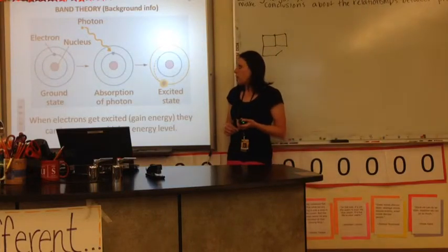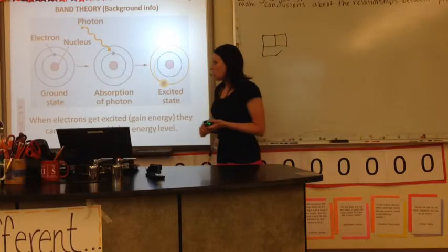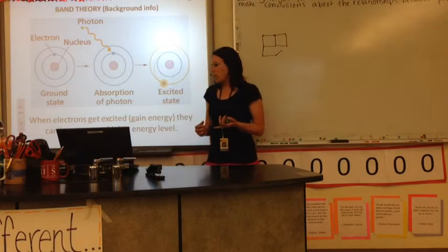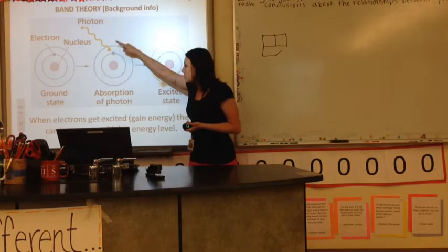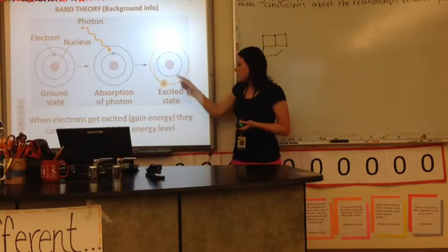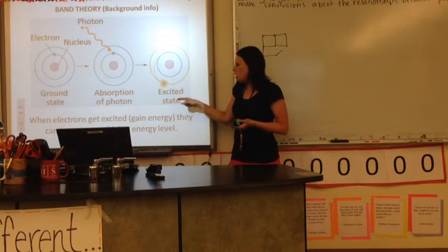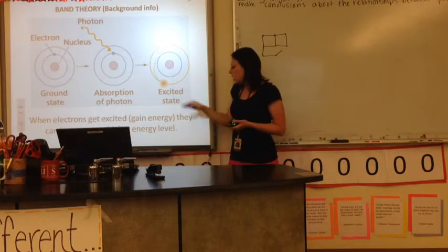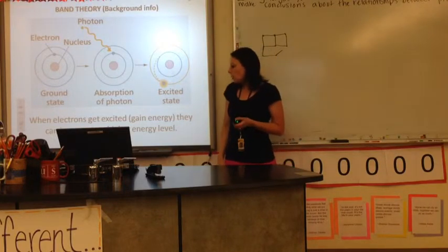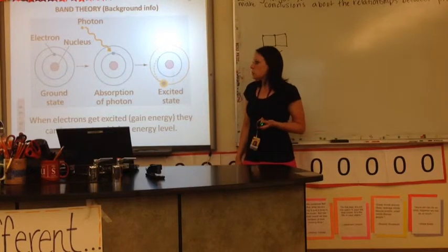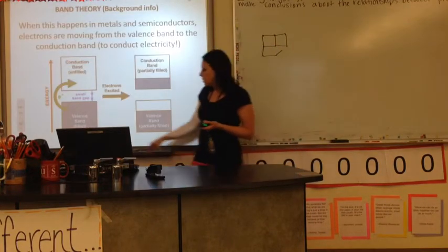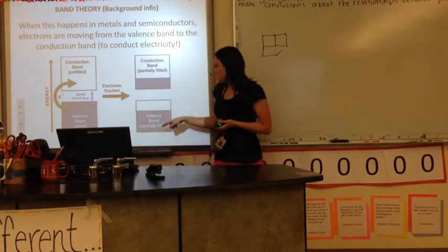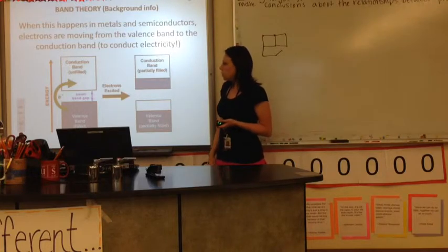A little bit of background on something called band gap theory. But you may remember from chemistry, you've got atoms in their ground state, their lowest energy. Something happens where a photon interacts with an electron. The electron gets excited and it jumps up to what's called the conduction band from its valence band. And this is how electrons flow, electricity. So they can jump to this higher energy level. So here's a picture showing an electron has to jump this gap. Okay? And it jumps from the valence band into the conduction band.